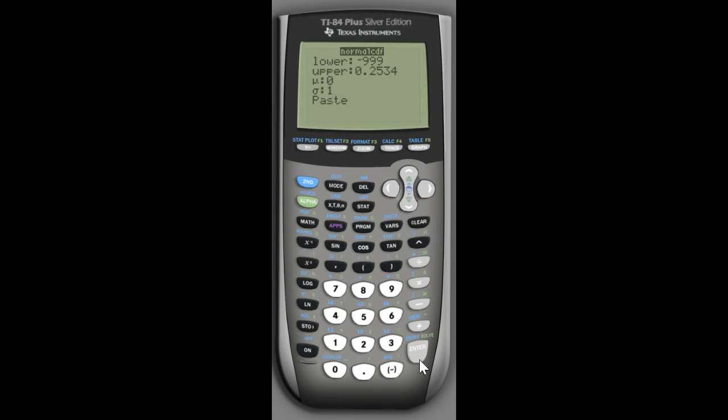So I paste that and then I hit enter. And if you look, that comes up as almost exactly 60%, which means 60% of the data is to the left of that z-score. The other 40% is above that z-score.